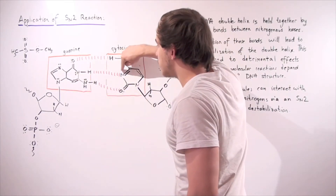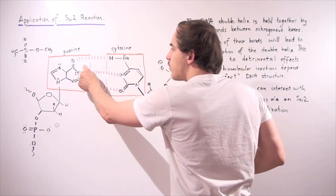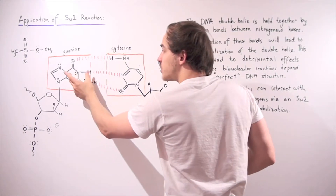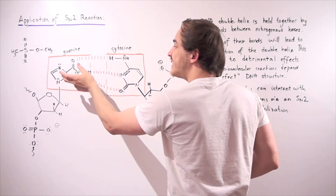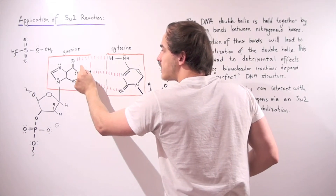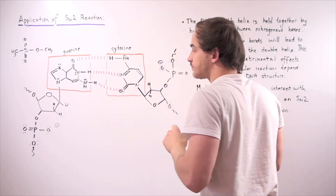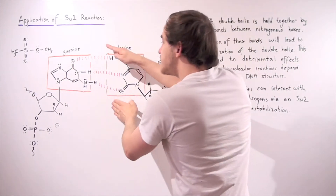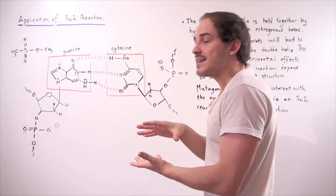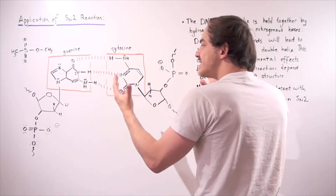For example, the lone pair of electrons creates a partially negative charge that attracts the partially positive charge on the H atom. This partial negative charge arises from the difference in electronegativity between the N atom and H atom, or the O atom and carbon atom. These bonds are very important because they stabilize the structure and allow our two nucleic acids to stick together.